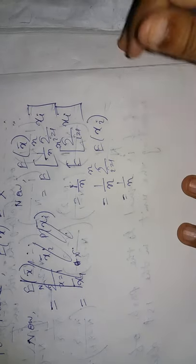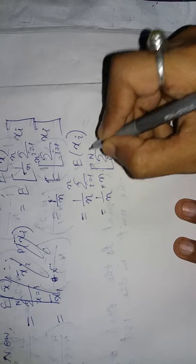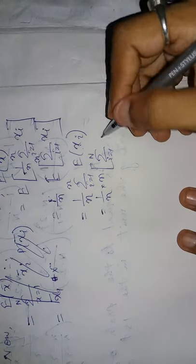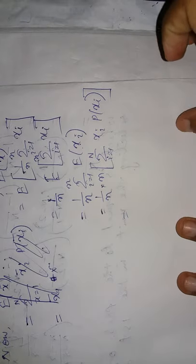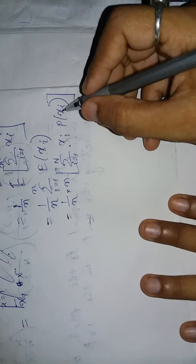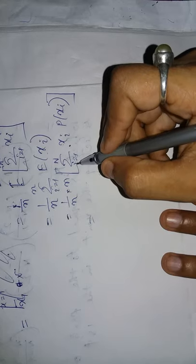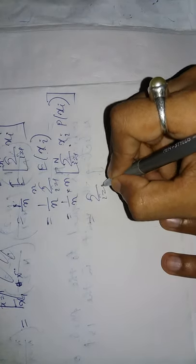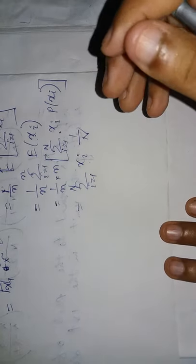Expected value formula: expectation of xi means summation i from 1 to capital N of xi p(xi). This will cancel. So we have summation xi times p(xi). The p(xi) value: since we have n total units, the probability of any unit is 1 by capital N.